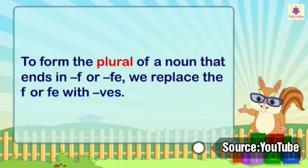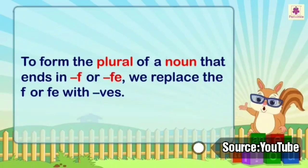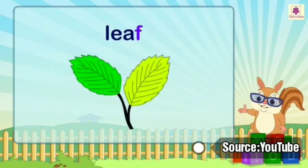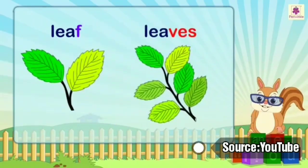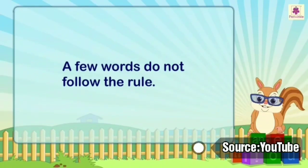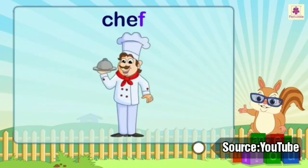To form the plural of a noun that ends in F or FE, we replace the F or FE with VES. For example: leaf → leaves. However, a few words do not follow this rule. For example: chef → chefs.